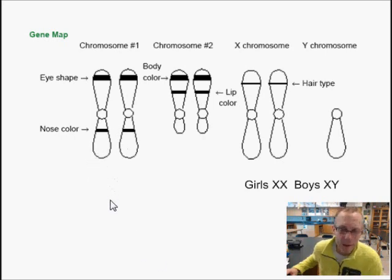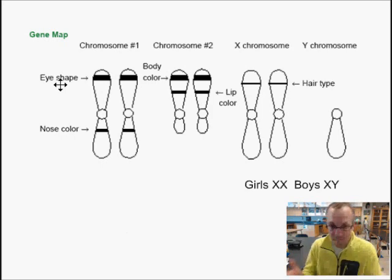We'll get into that in a second. On these chromosomes are genes. The genes or the codes for what type of eye shape you would have. Notice on the top of chromosome number one, we have the codes for eye shape. On the bottom, we have the codes for nose color. Our chromosome twos are interesting. We have body colors found at the top, lip color found at the bottom.